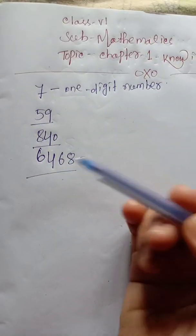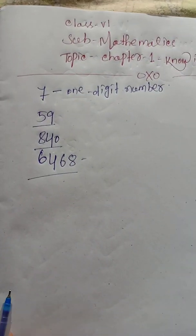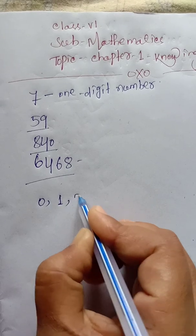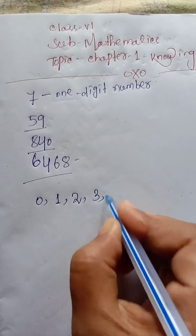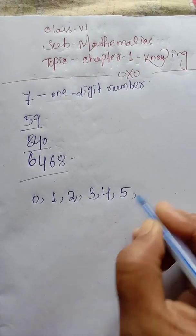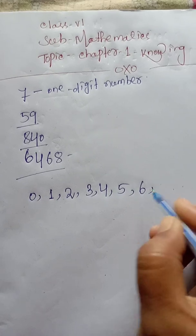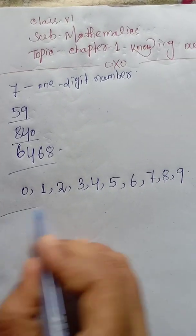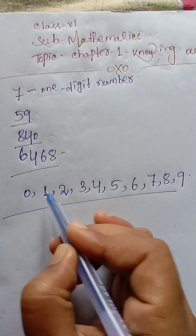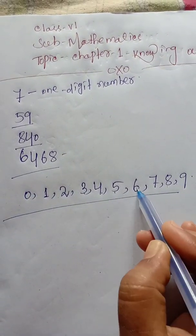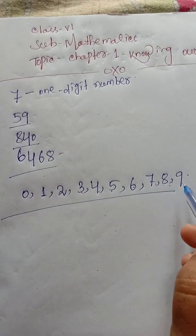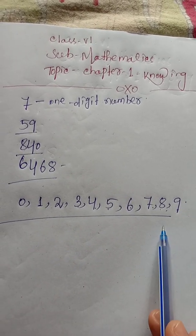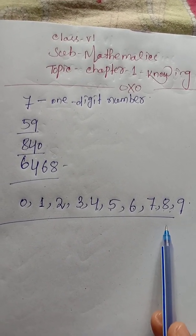In mathematics, we use 10 digits. These are 0, 1, 2, 3, 4, 5, 6, 7, 8, 9. These are the 10 digits. By using these 10 digits, we write different kinds of numbers.